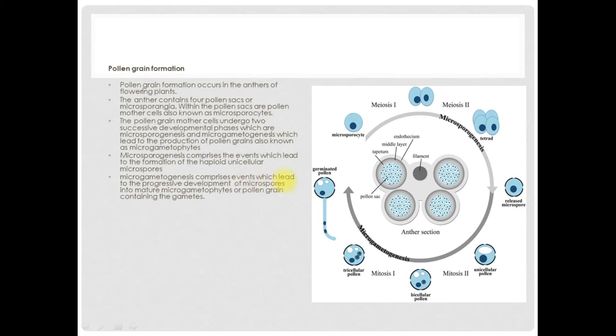Microgametogenesis comprises events which lead to the progressive development of microspores into mature microgametophytes or pollen grains.